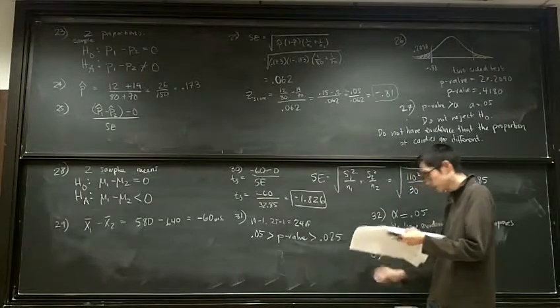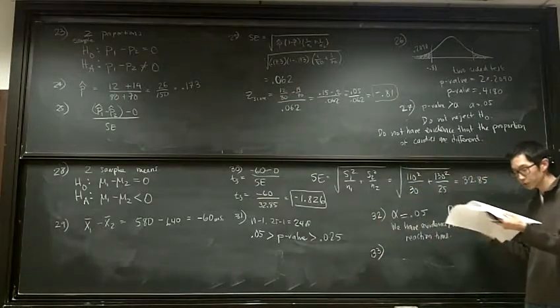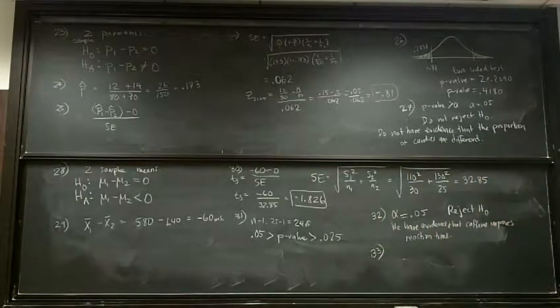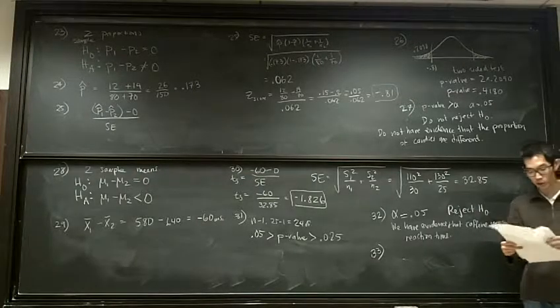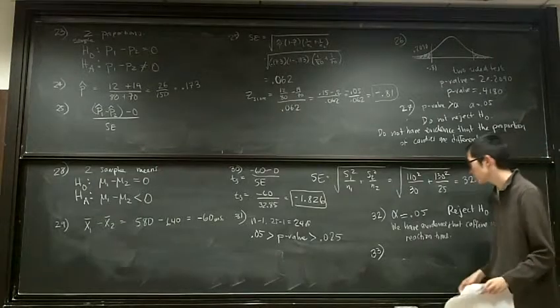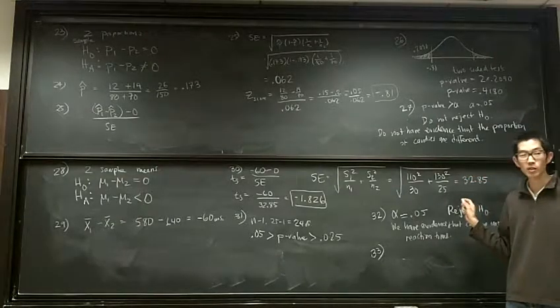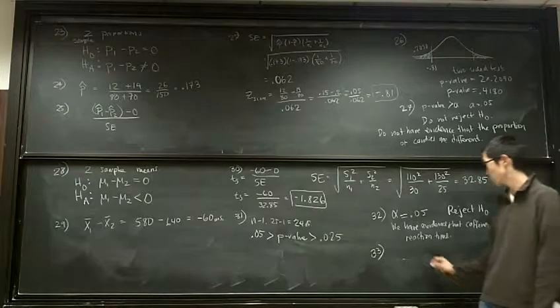Okay. And then lastly, number 33, if this conclusion was wrong, the conclusion to reject the null hypothesis was wrong, is that a type 1 or type 2 error? Type 2. It's a type 1. Rejecting the null by mistake is a type 1 error.